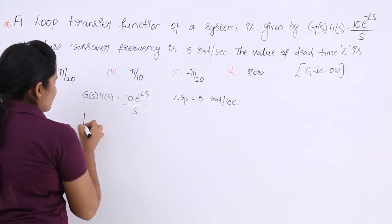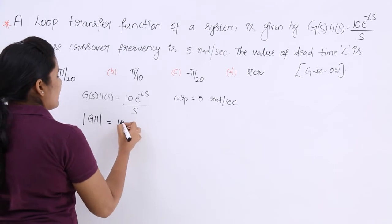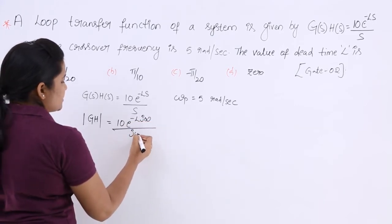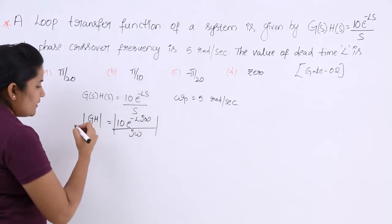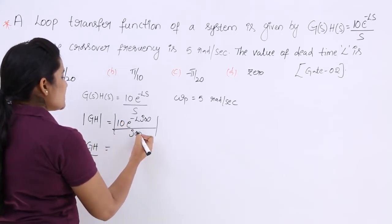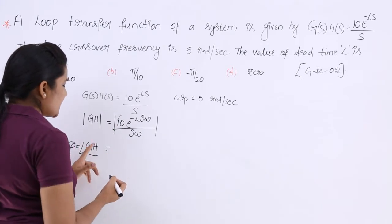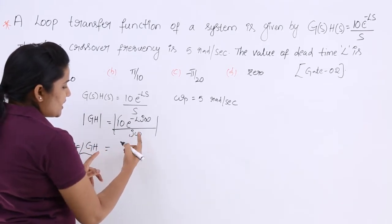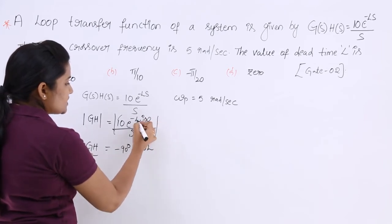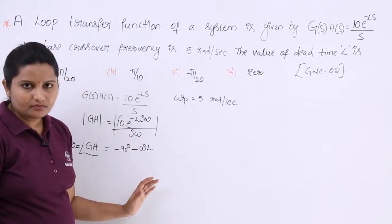Here I am going to consider magnitude of GH. For simplification, GH is considered in the j-omega domain. The magnitude is 10 divided by j-omega, with the exponential term e to the power minus j-omega-L. The phase phi is equal to the angle of the transfer function. In the denominator j-omega is there, so the phase is equal to minus 90 minus omega-L. This is your phase, and this is your magnitude.